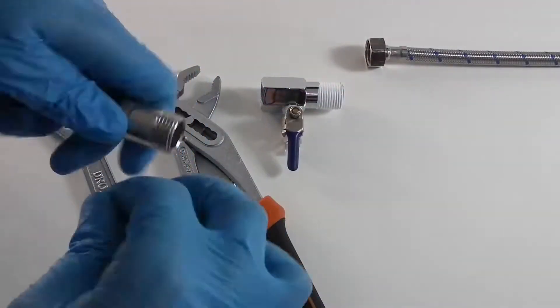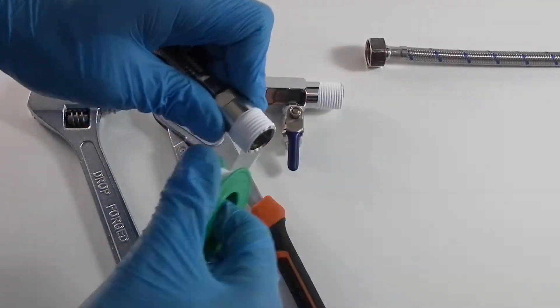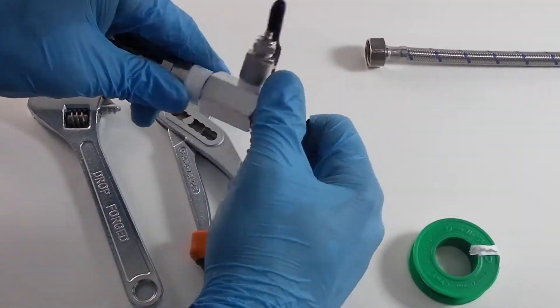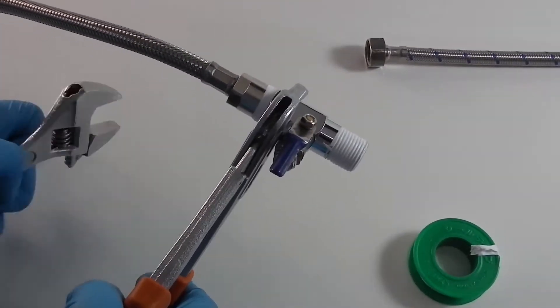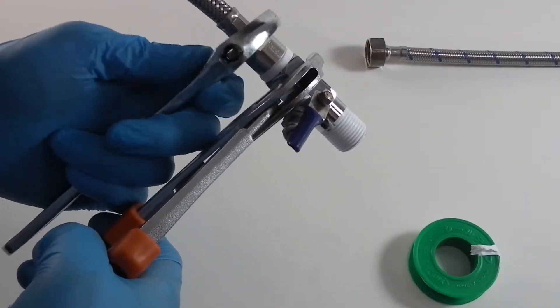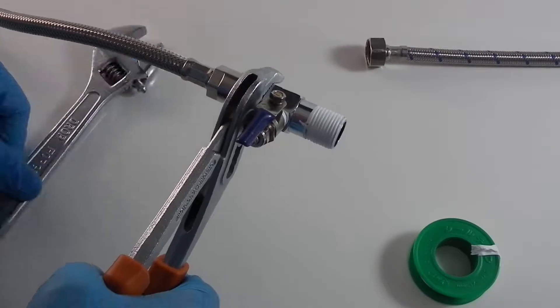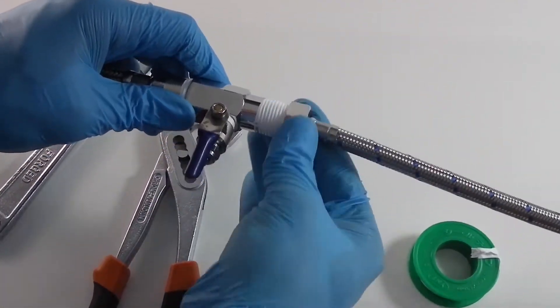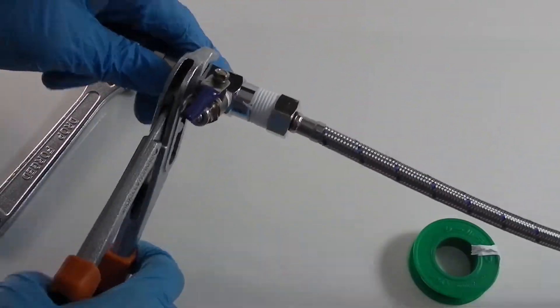Now we will fit the diverter valve between the main cold water feed, which normally has a 1/2 inch male thread connection, and the cold water line with 1/2 inch female thread to the sink. Make sure to use PTFE tape on the male thread to make the connection watertight. You can use the spanner to support the diverter valve while tightening connections with the wrench.